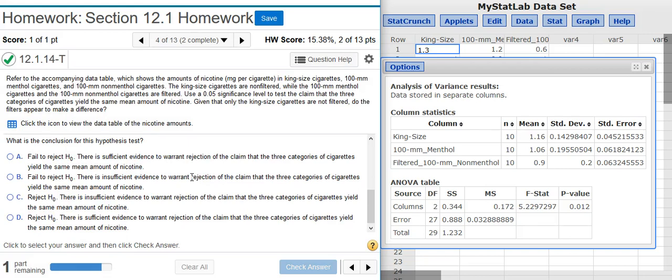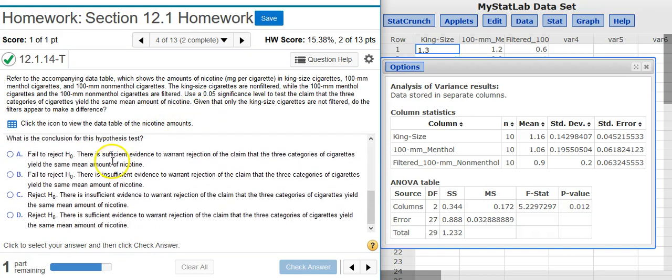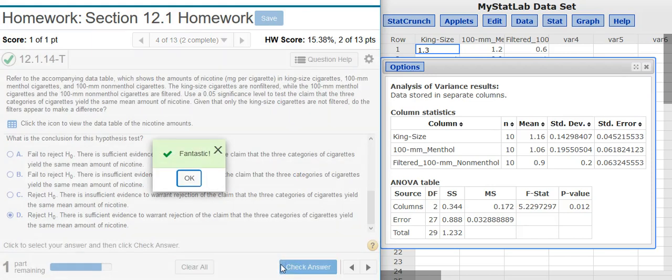The next part asks, what is the conclusion for this hypothesis test? Well, my P-value here in this example is about 1%. I'm asked to use a 5% significance level. 1% is less than 5%, so I'm within the region of rejection. And therefore, I'm going to reject the null hypothesis. And of course, when we reject the null hypothesis, there's always sufficient evidence. Fantastic!